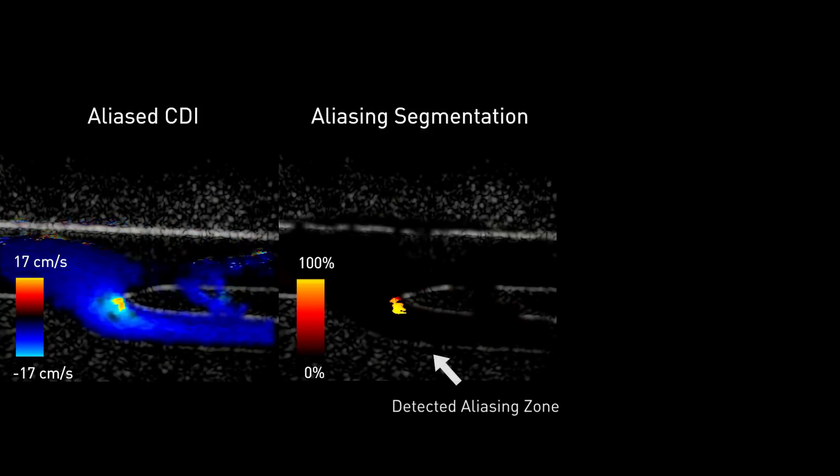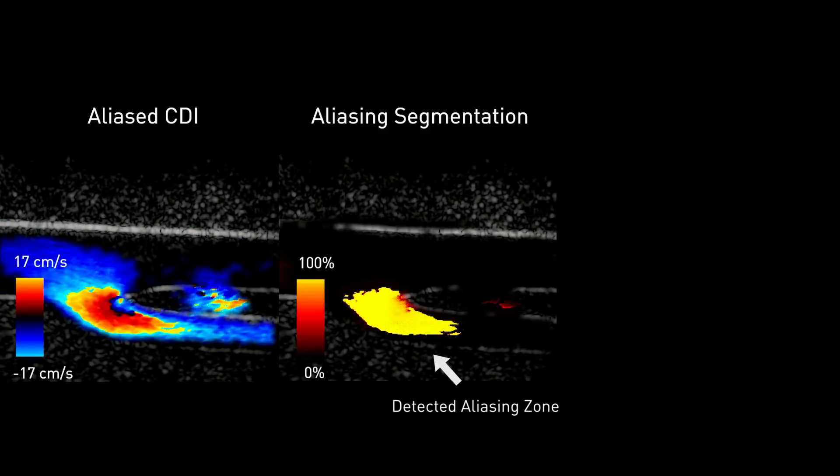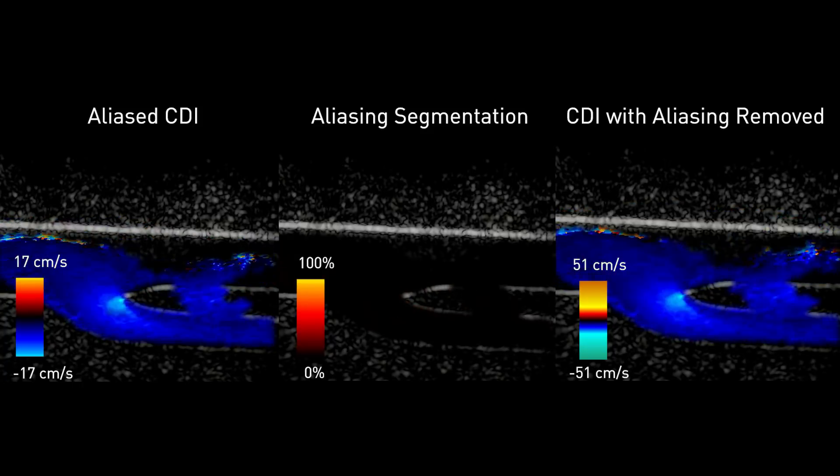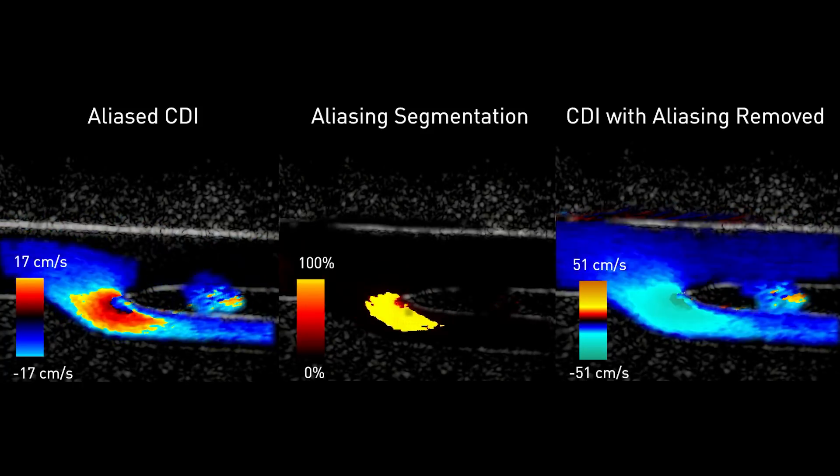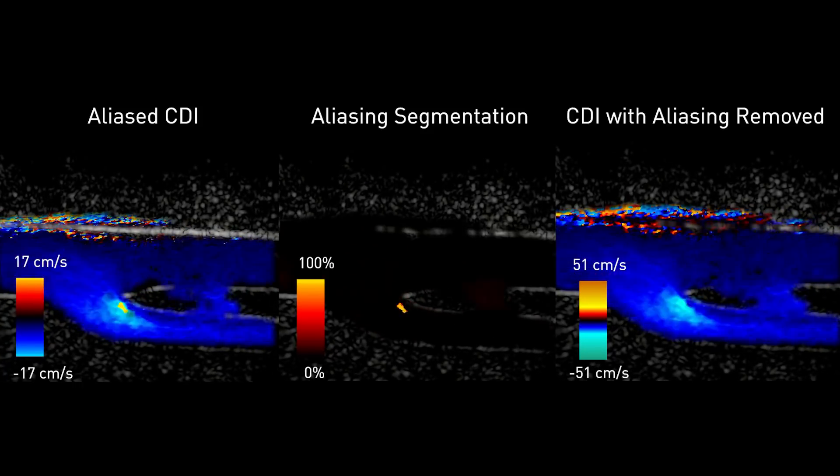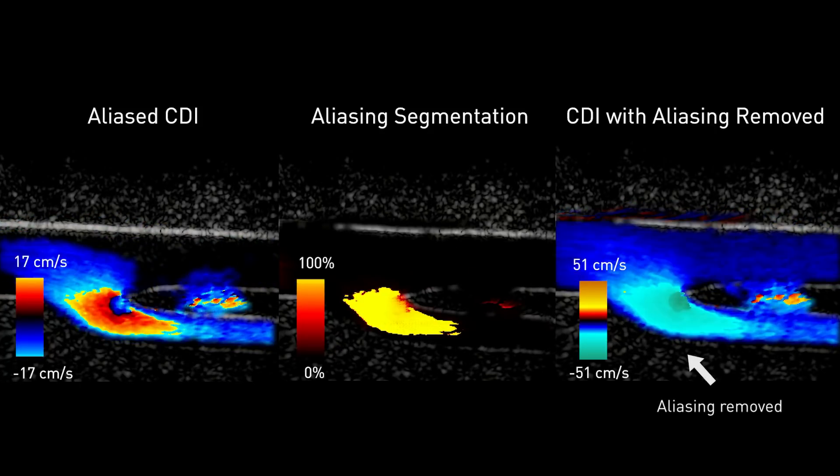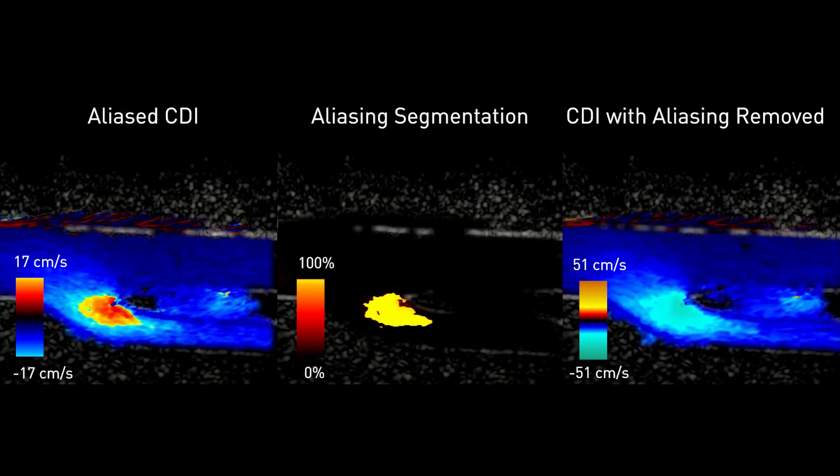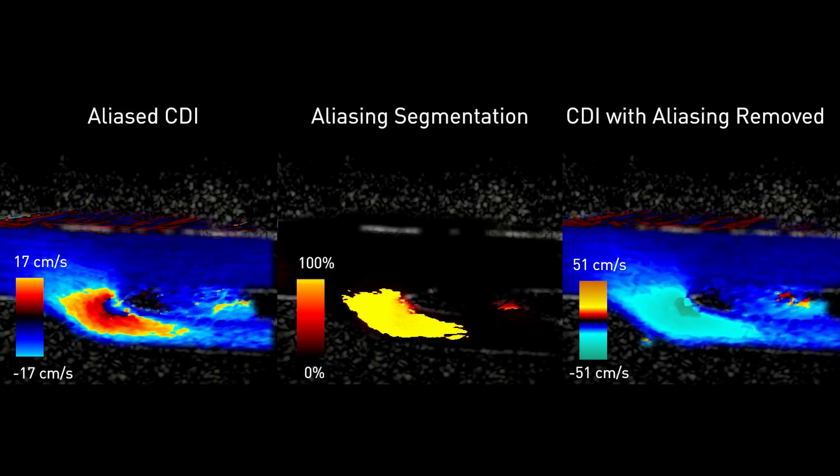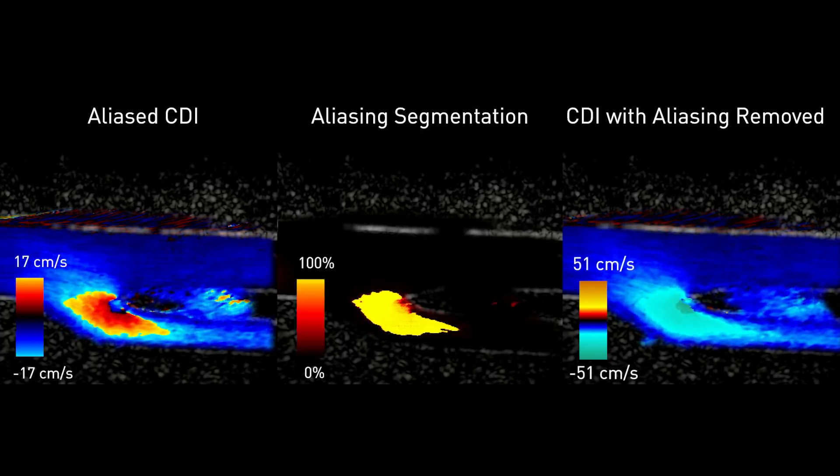The middle sequence shows that the AI was able to identify the aliasing in each frame in real time. On the right, with the deep learning power dealiasing mode enabled, the maximum detectable flow speed is increased. There are no more aliasing artifacts and the visualization of flow is now correct. We can replay the CDI in slow motion to really highlight the improvement in visualization.